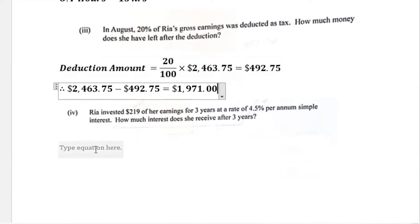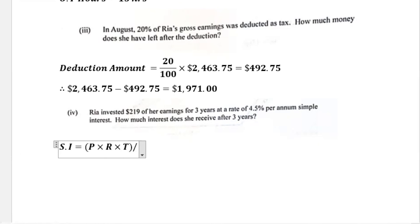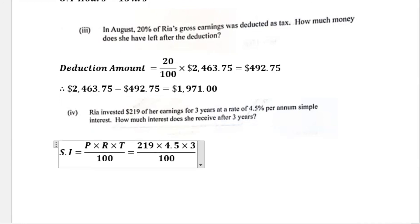Part four says Ria invested $219 of her earnings for three years at a rate of 4.5 percent per annum simple interest. How much interest does she receive after three years? The formula for simple interest is SI = (Principal × Rate × Time) ÷ 100. Here the principal is $219, the rate is 4.5 percent, and the time is 3 years.